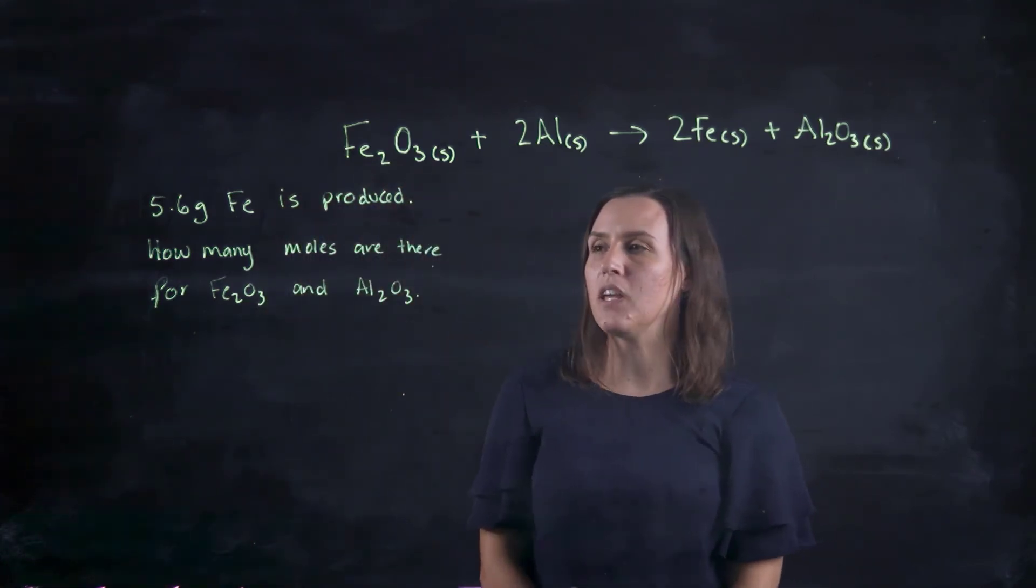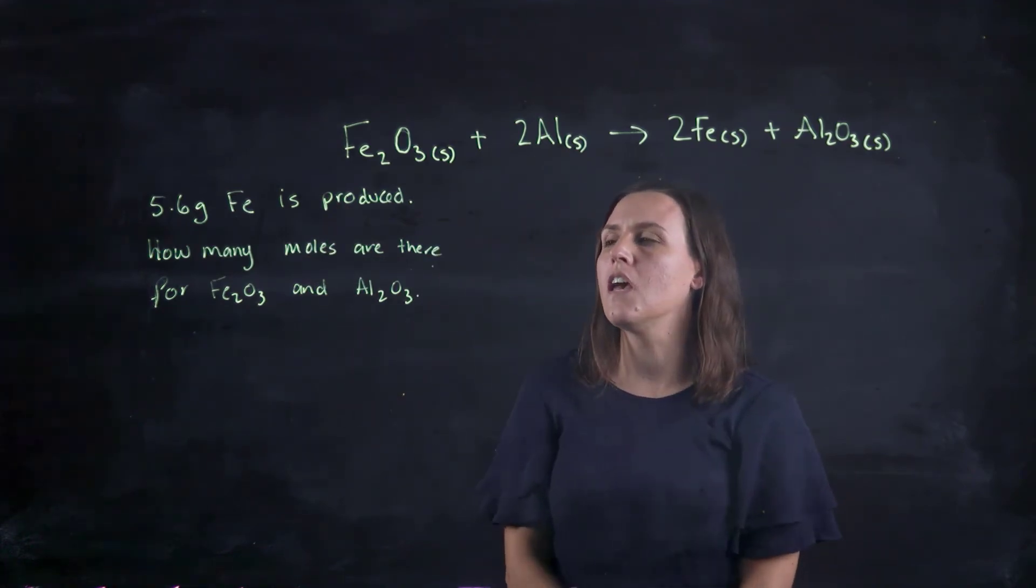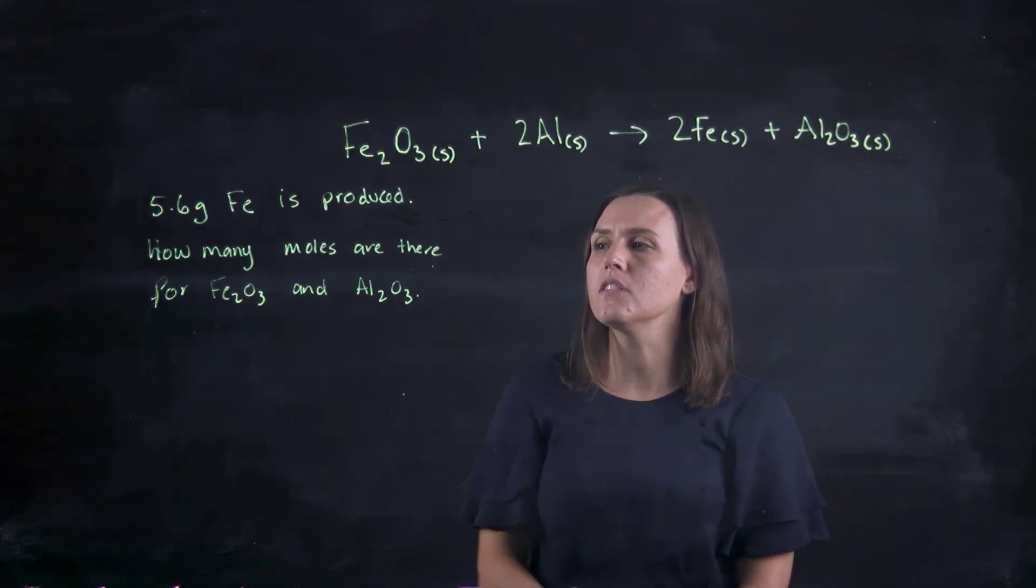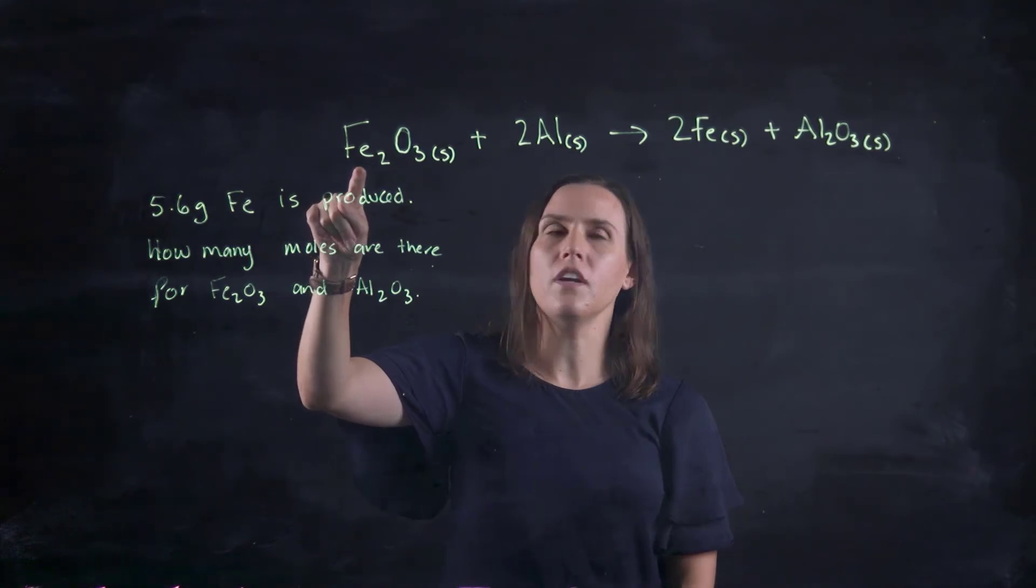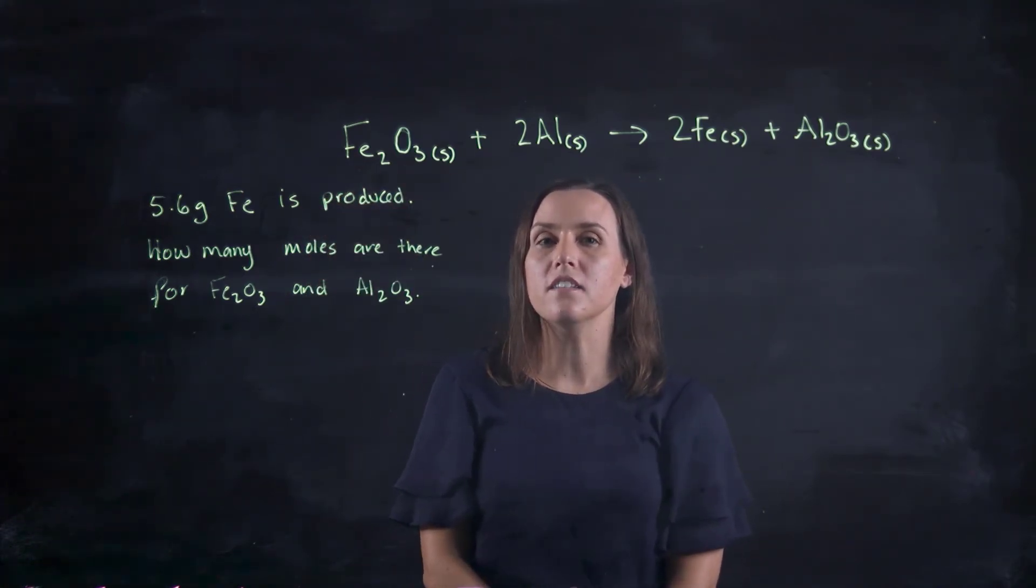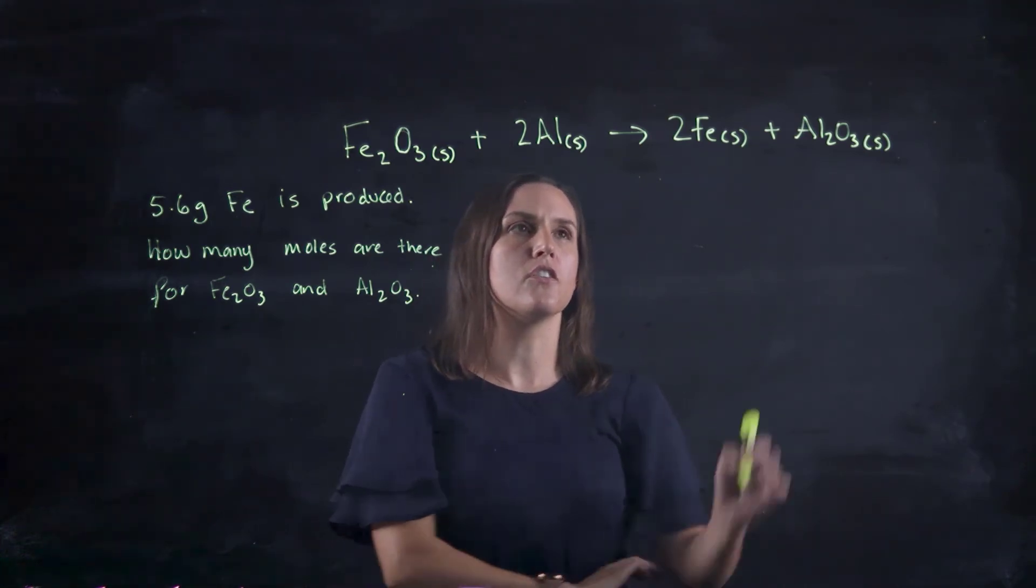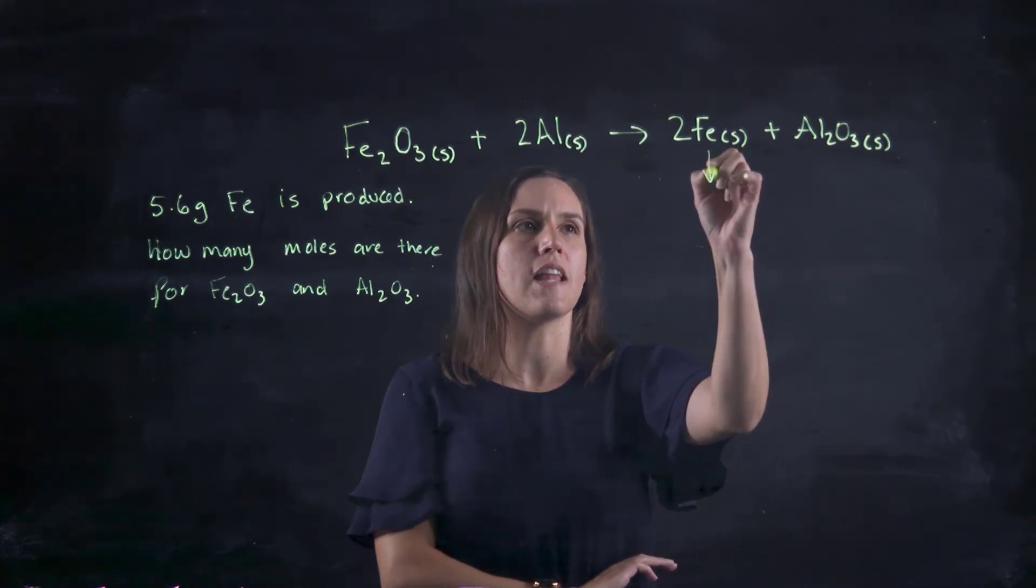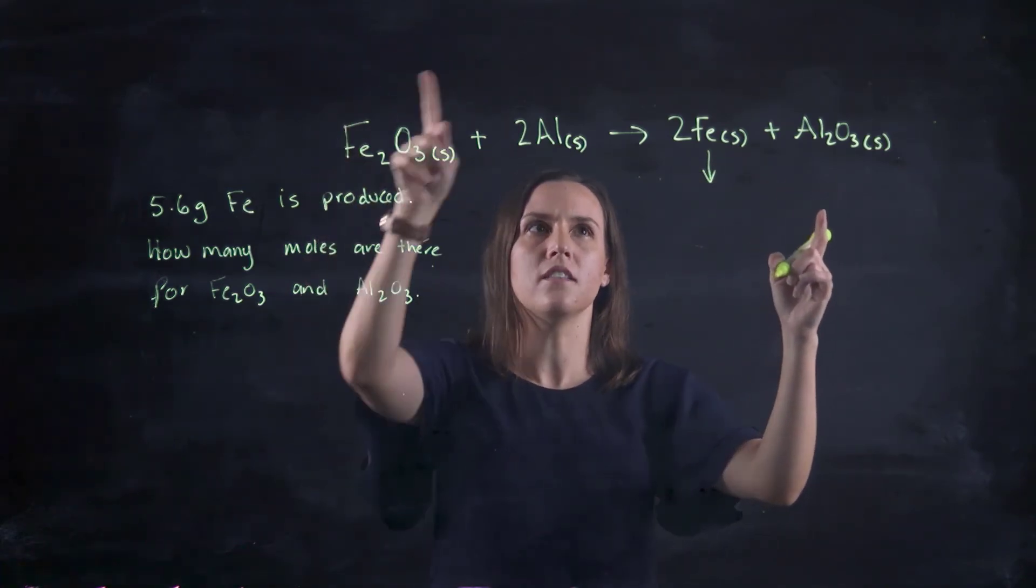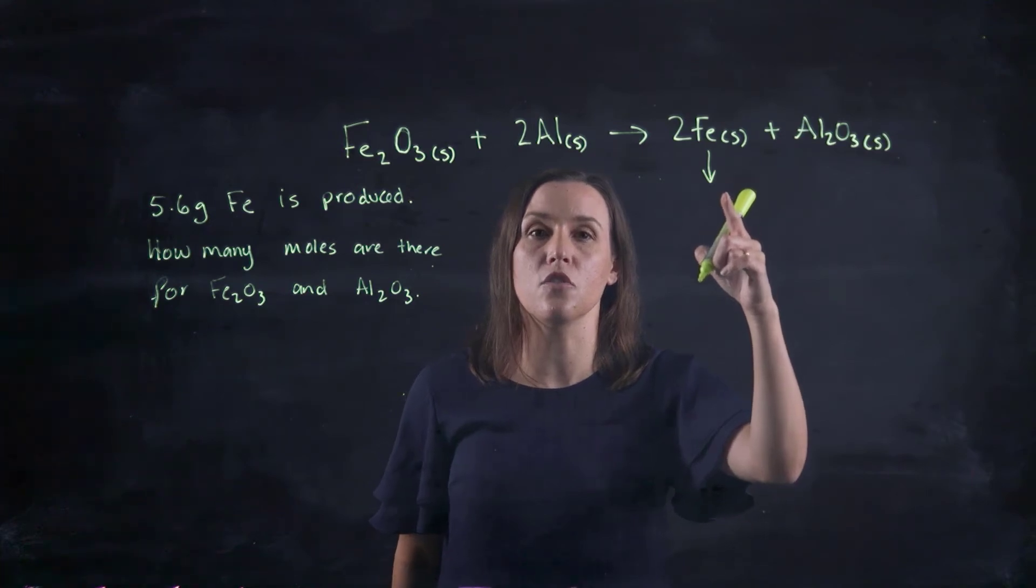Okay, so with this question, we are told that 5.6 grams of iron is produced, and we want to know how many moles of Fe2O3 and Al2O3 would be required to produce 5.6 grams of Fe. So in order to use the relationship that we have, so the one to two to two to one, we need to firstly convert this into moles.